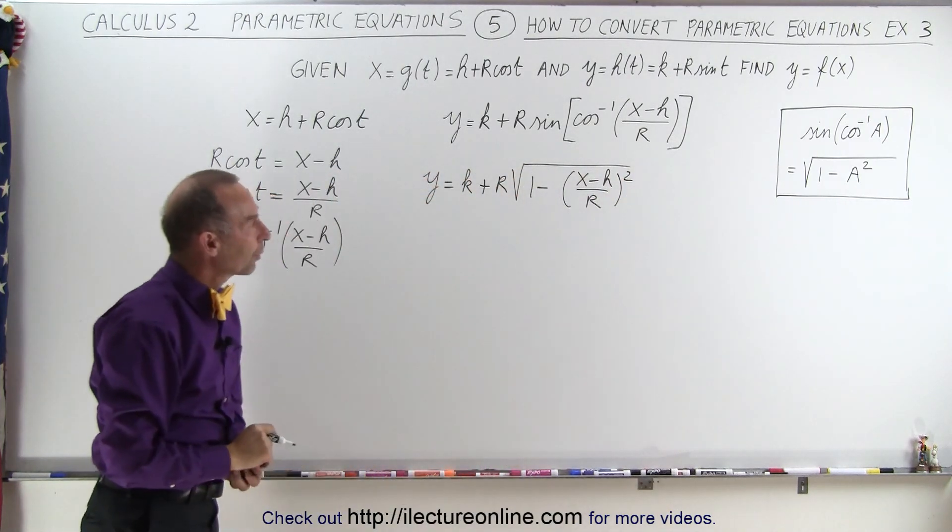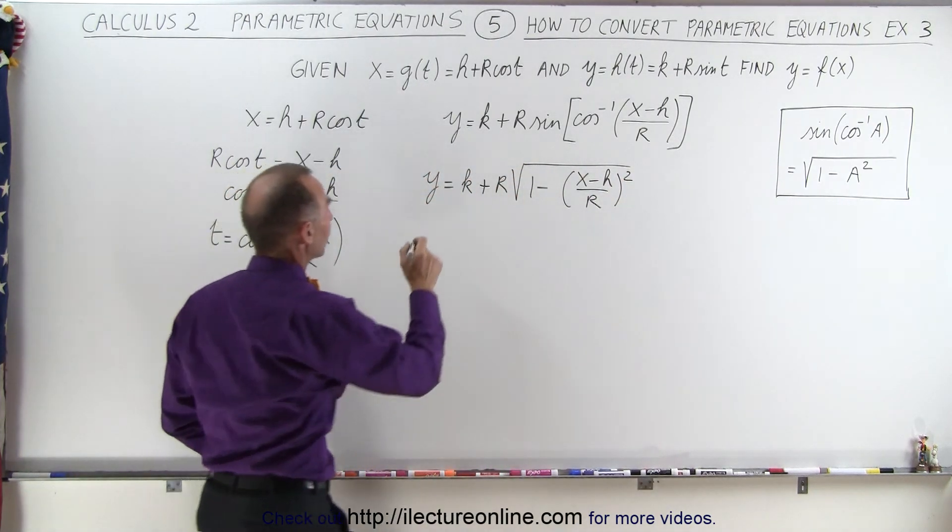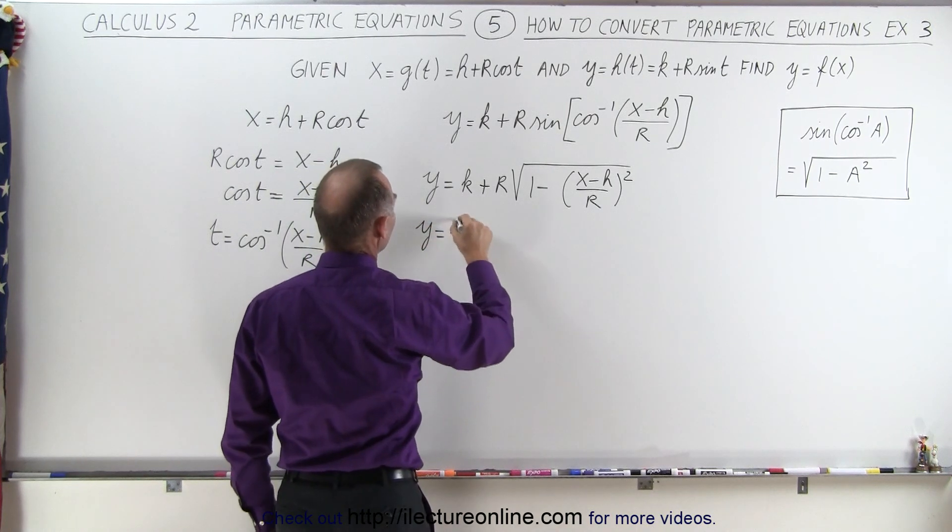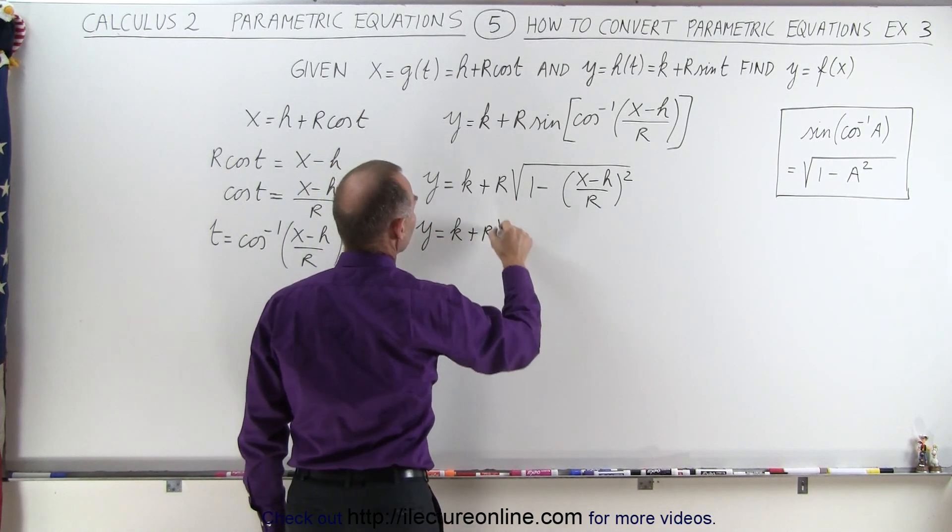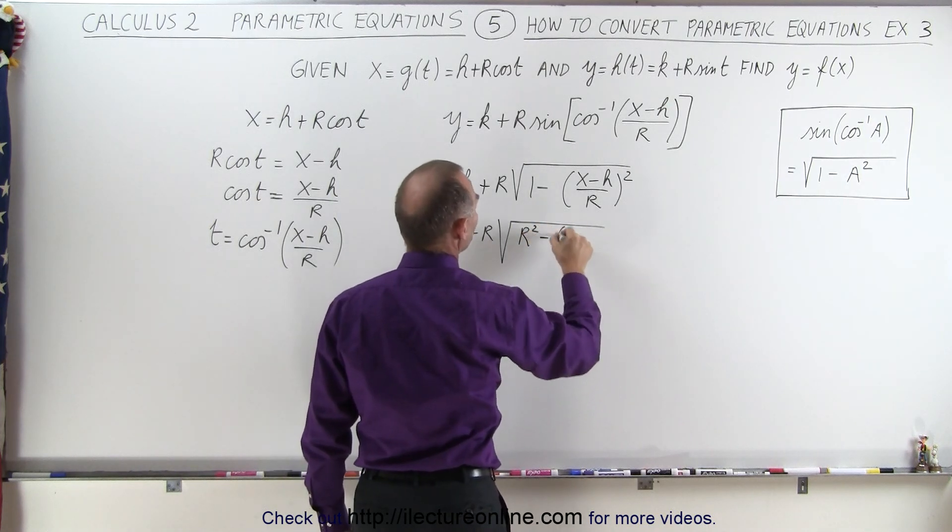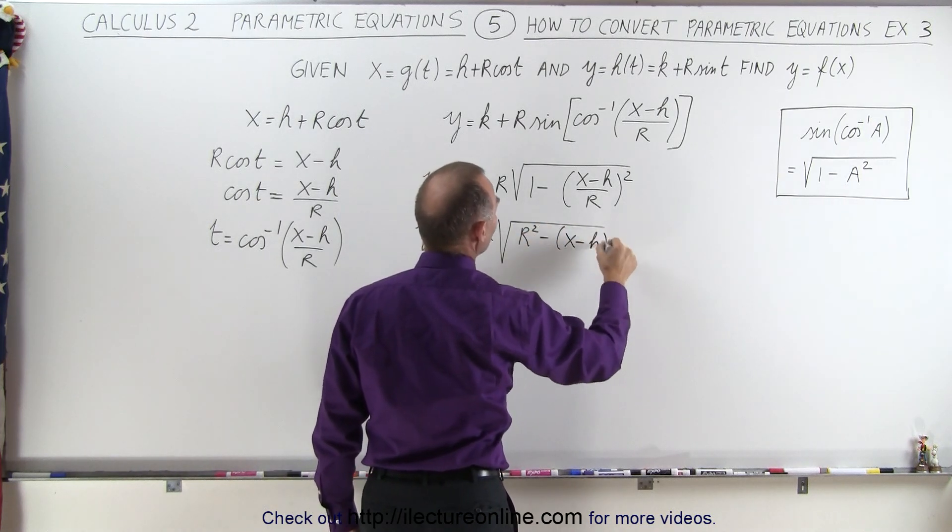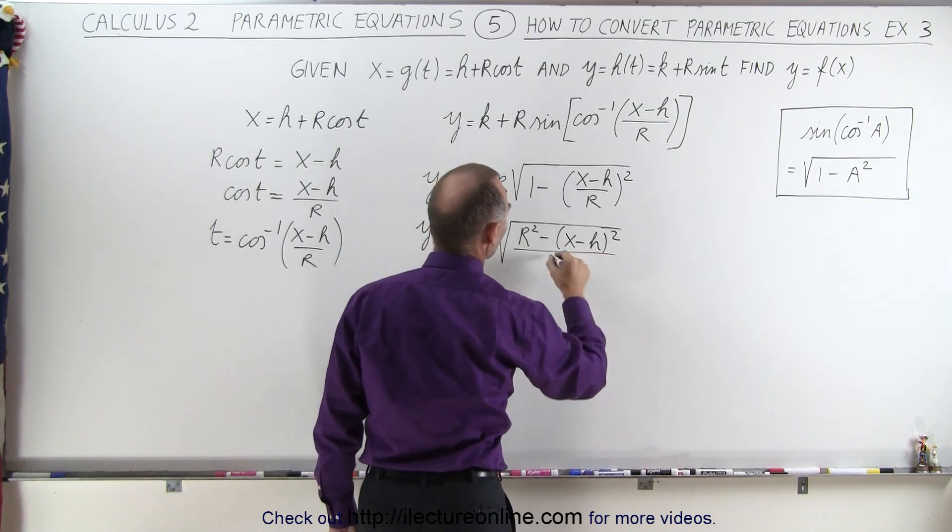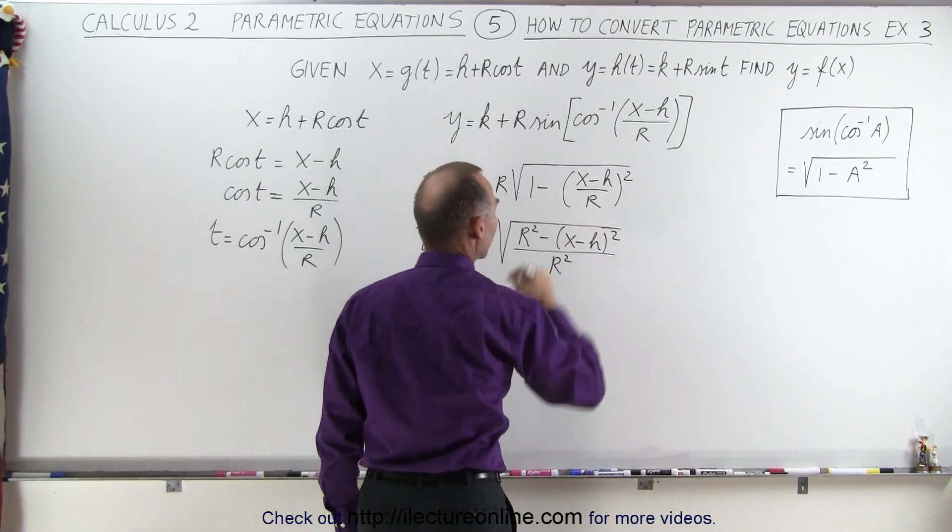Okay, so what we're going to do next is the following. We're going to write that Y is equal to K plus R times the square root of R squared minus the quantity X minus H squared all divided by R squared. So what I did here is write over the common denominator.